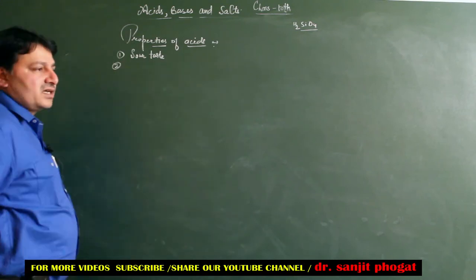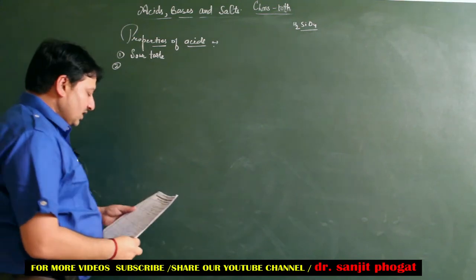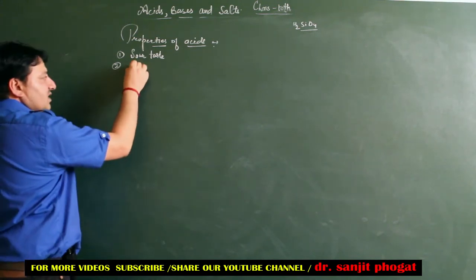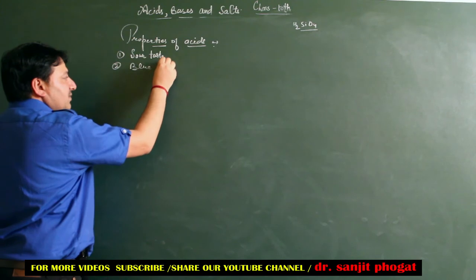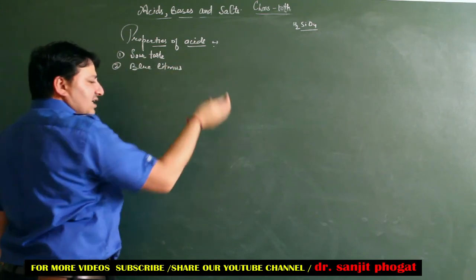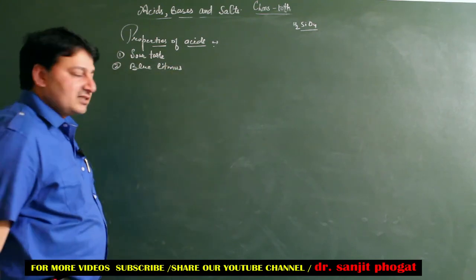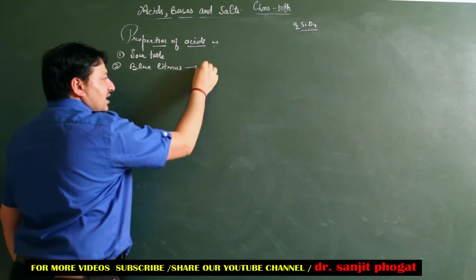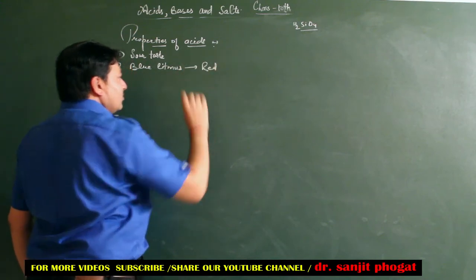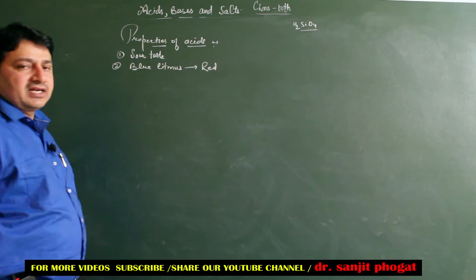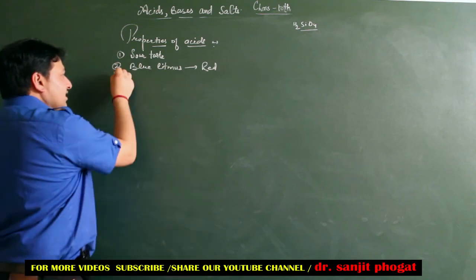दूसरी Property - Blue Litmus अगर है, तो Acids उसको Red में बदल देते हैं। Litmus के बारे में detail से हम Next Topic में पढ़ने वाले हैं - Indicators। Blue Litmus में अगर Acid डालो तो वो Red में Convert हो जाता है।